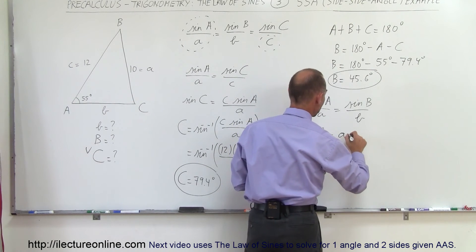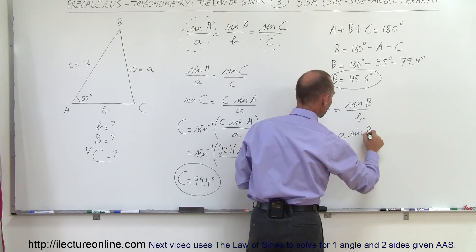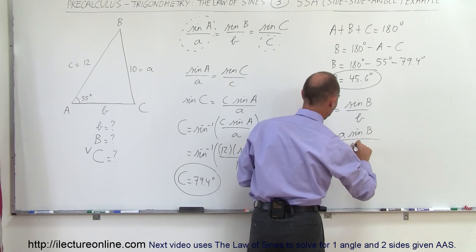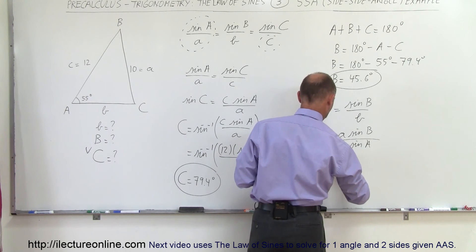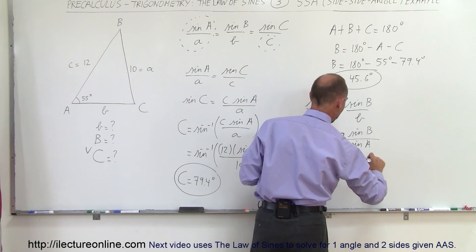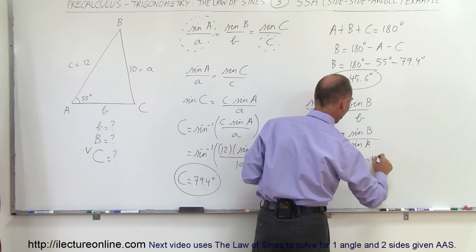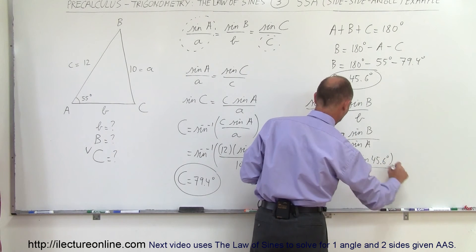So we get B is equal to A times the sine of angle B divided by the sine of angle A. And therefore B is equal to A, which is 10, times the sine of B, and B was 45.6 degrees, divided by sine of A.